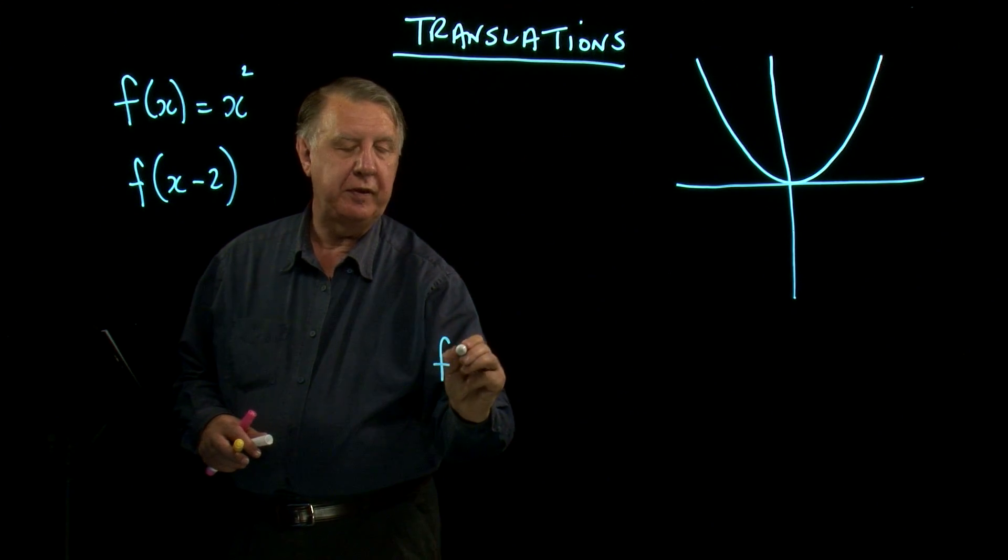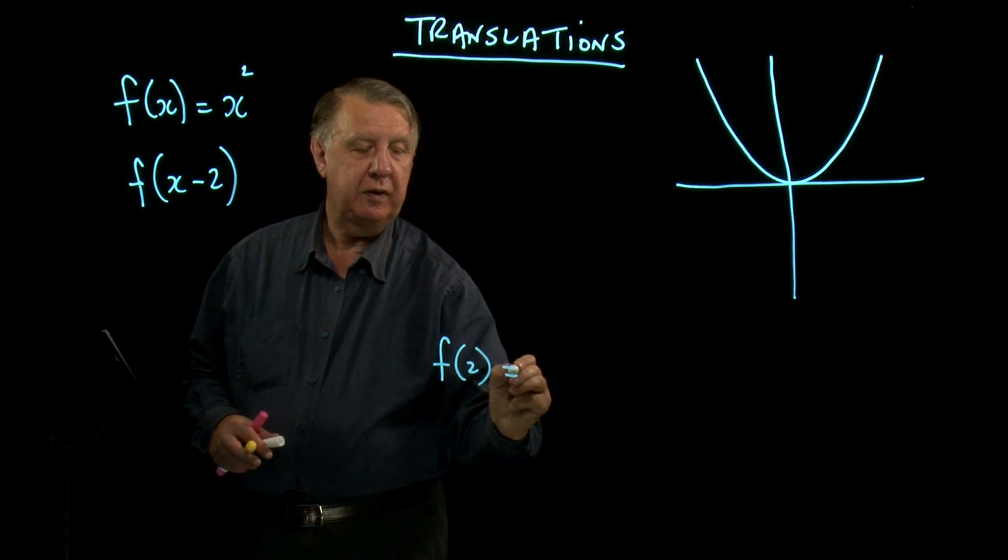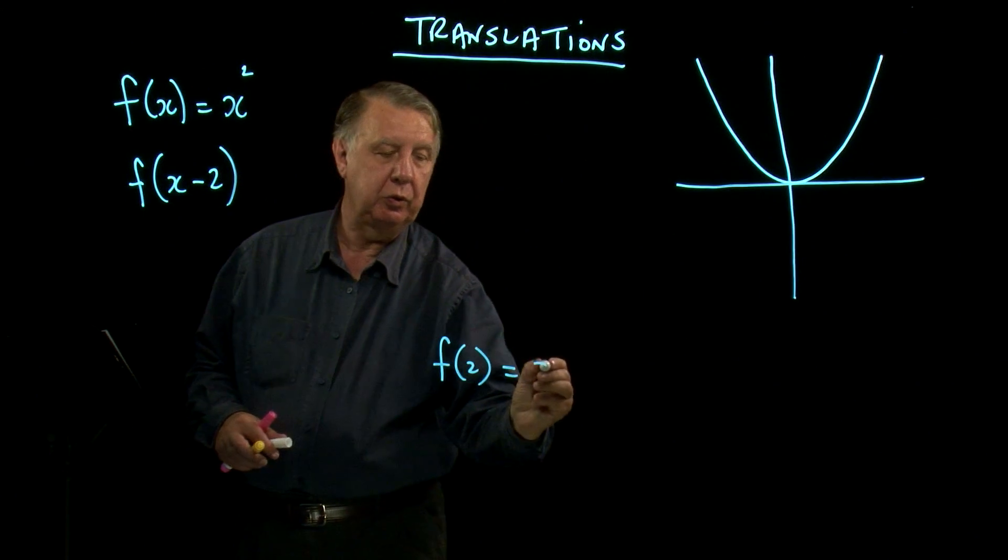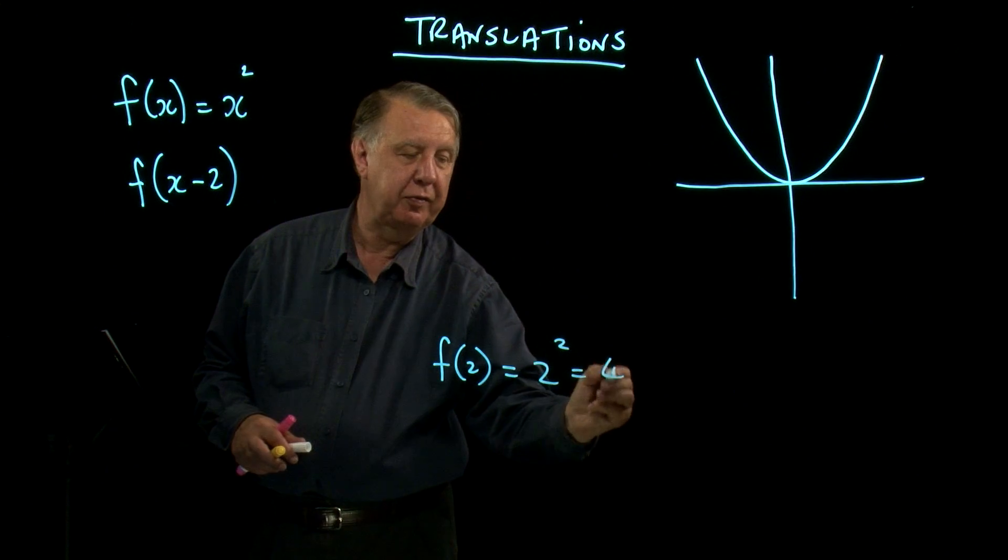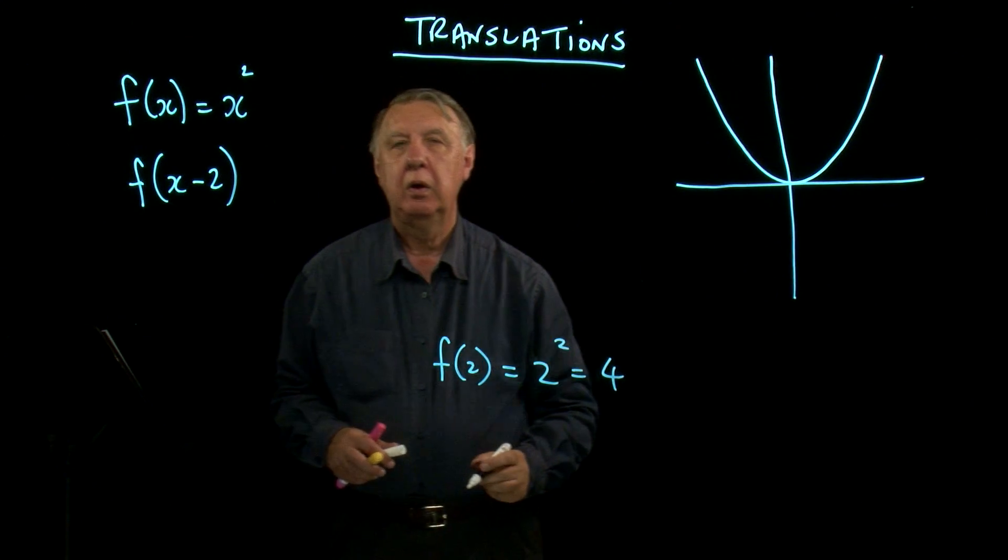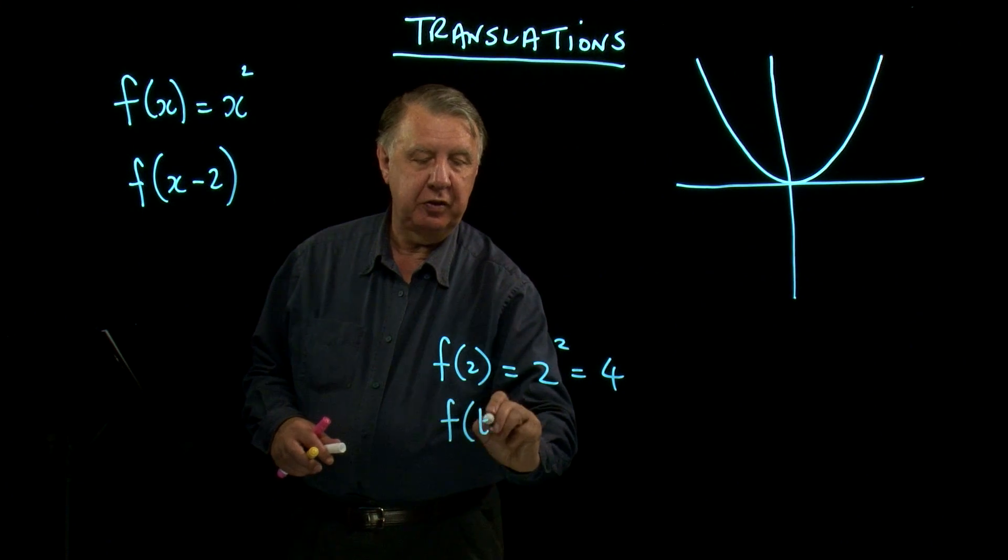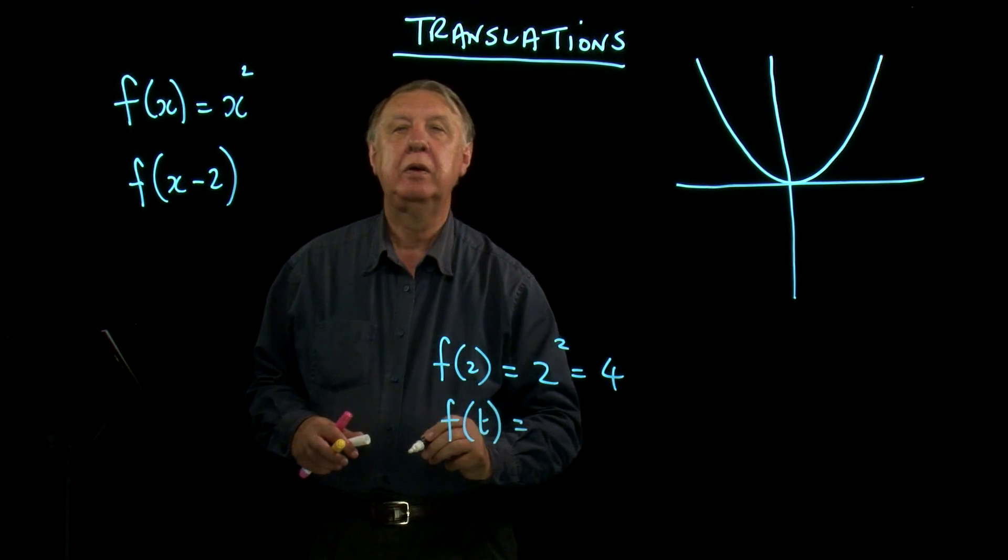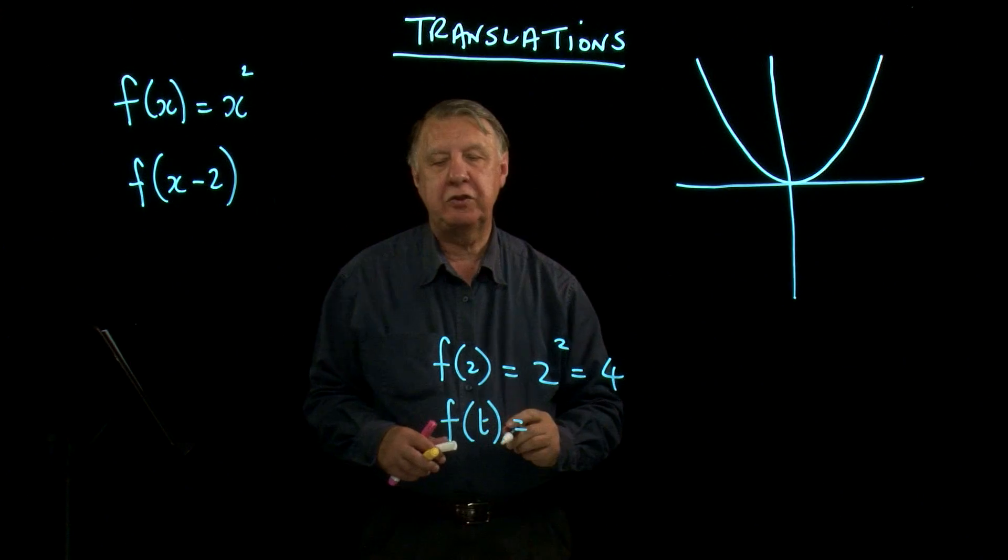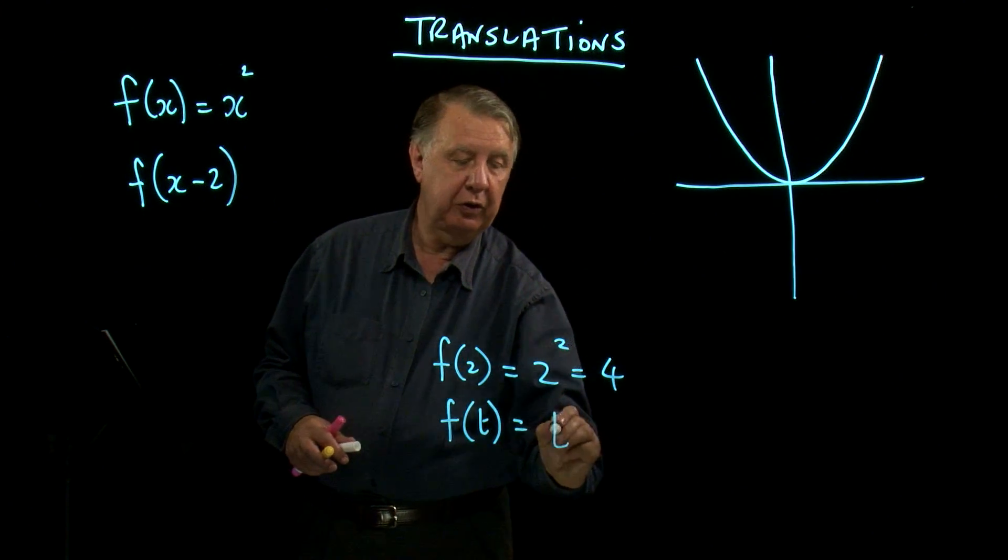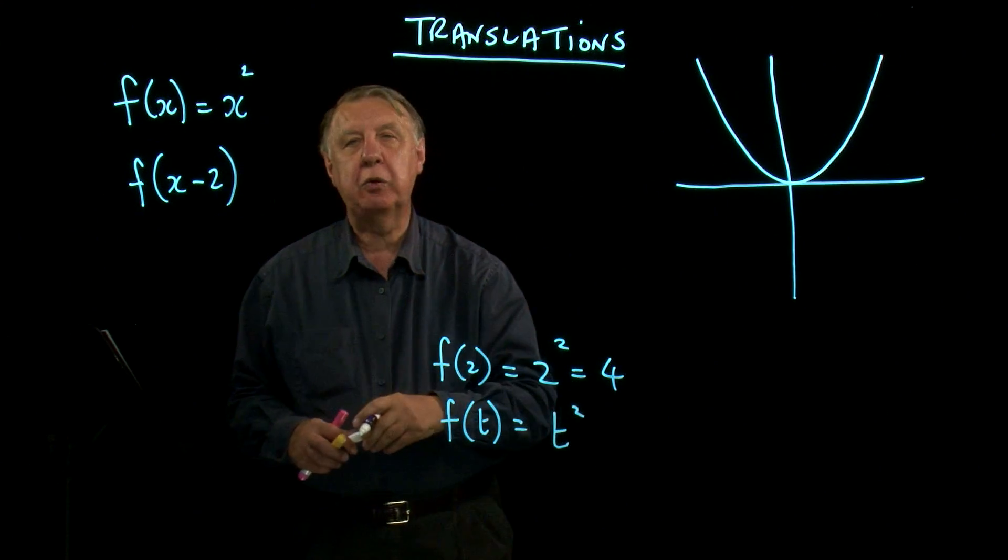If I said what's a function of 2, that means that you replace x by 2 and you'd get the answer 4. What would function of t mean? It would mean that you would replace x by t, you'd get t squared.